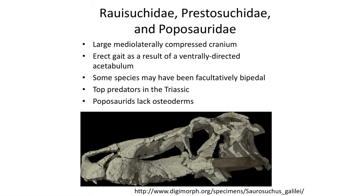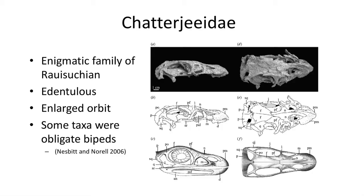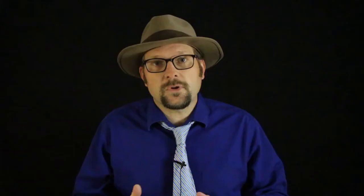The second group of Crurotarsians are the Rauisuchians, a diverse group that closely resembles dinosaurs, despite the fact that they are more closely related to crocodilians and exhibit a crocodile-normal ankle joint. They are often confused as dinosaurs, and they only lived during the Triassic period. They are loosely divided into a number of groups, such as the large Ornithosuchidae, the smaller Poposauridae, the sail-backed Tanystropheidae, and the bipedal Shuvosauridae, which includes the very dinosaur-looking Effigia — which, if I didn't tell you, you would think was a dinosaur, but it exhibits a crocodile-normal ankle and is placed within the Crurotarsia clade.